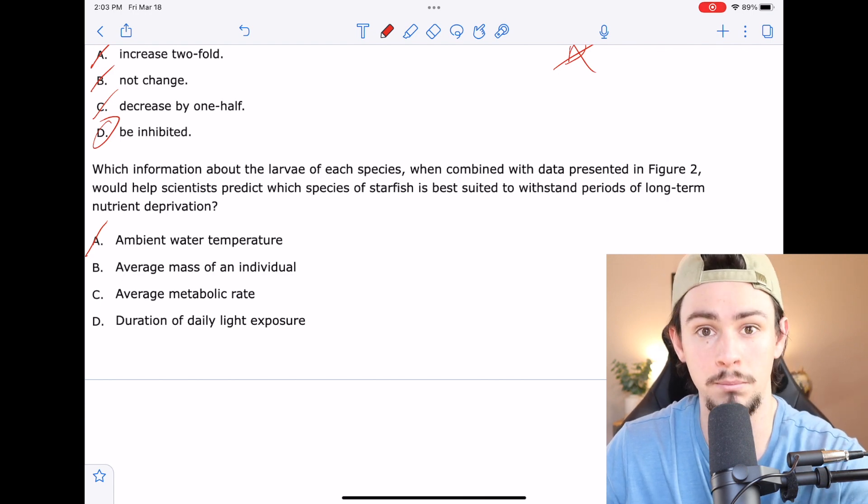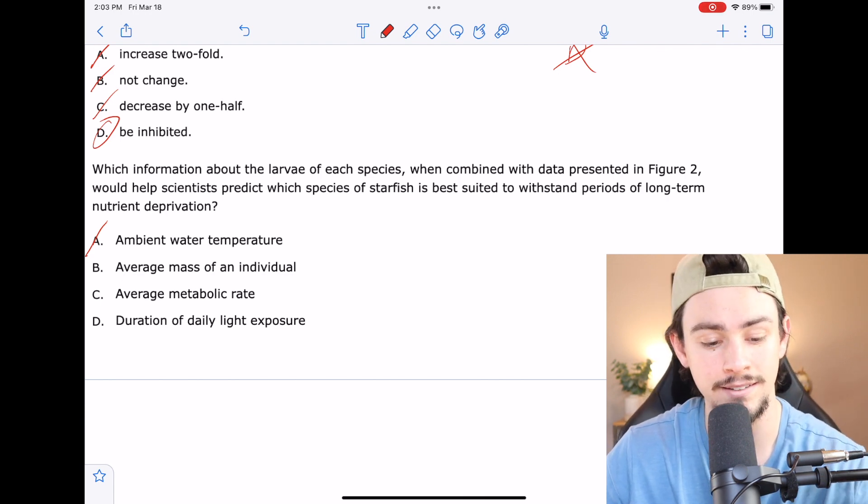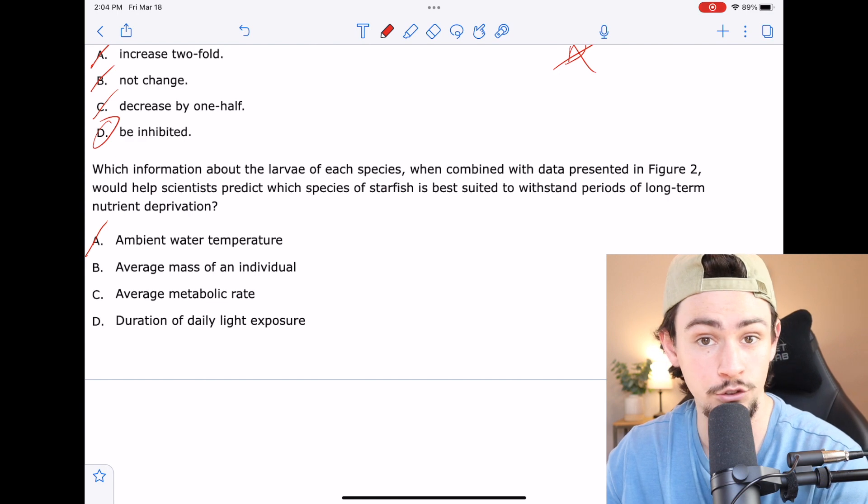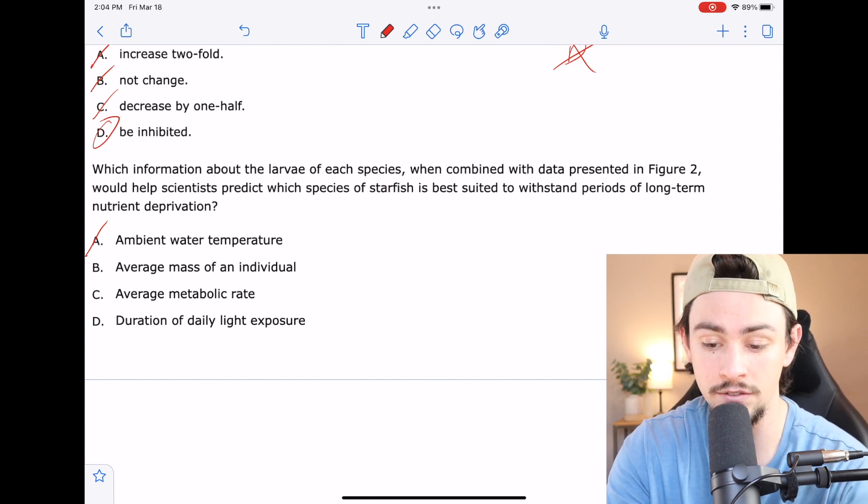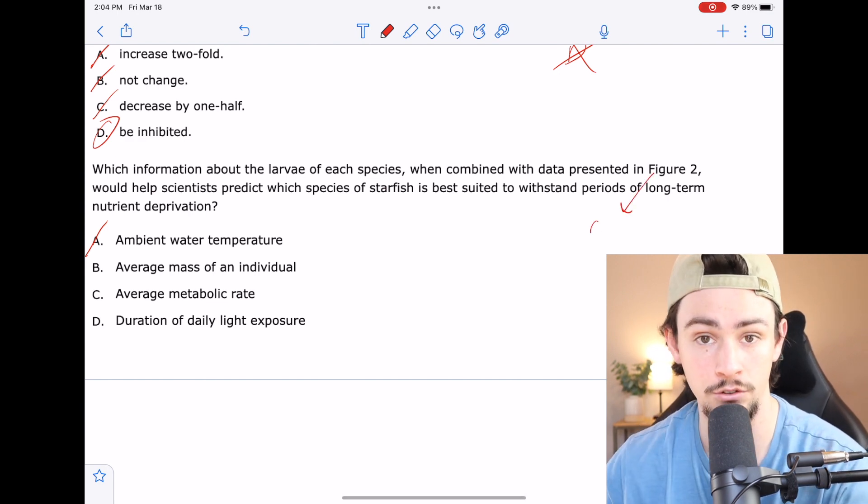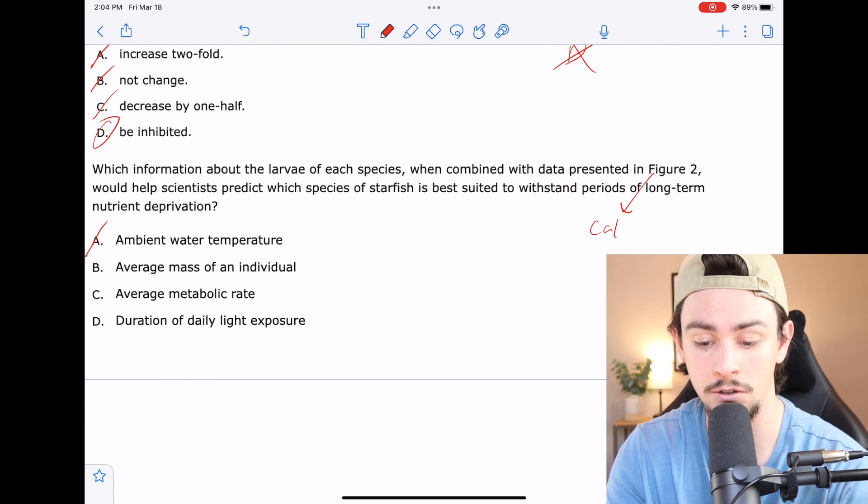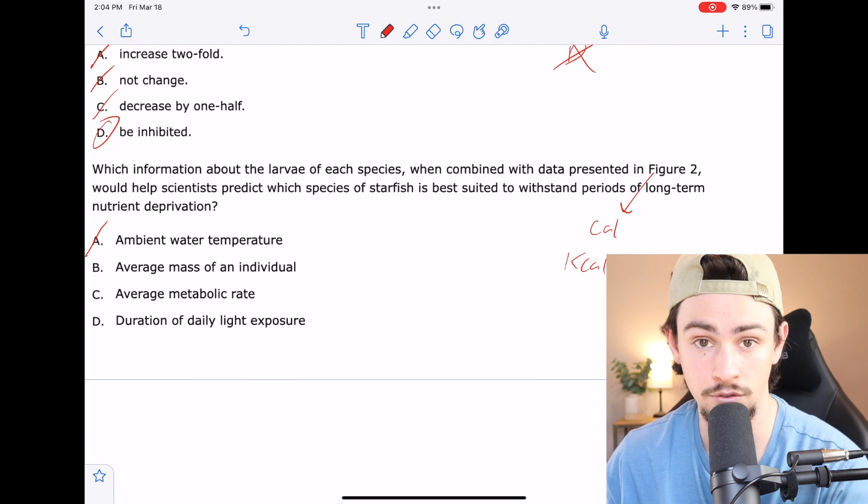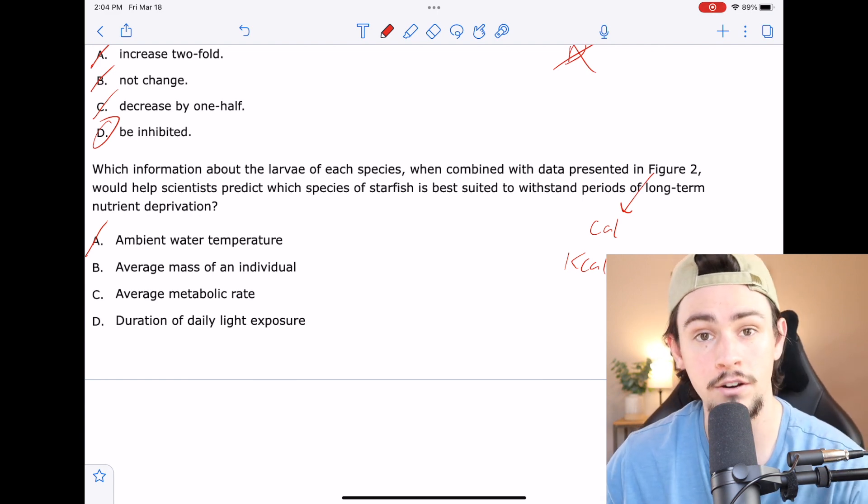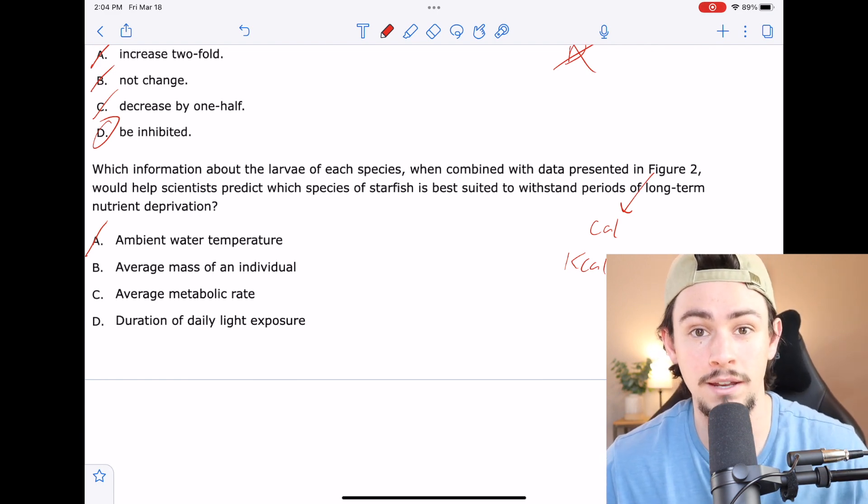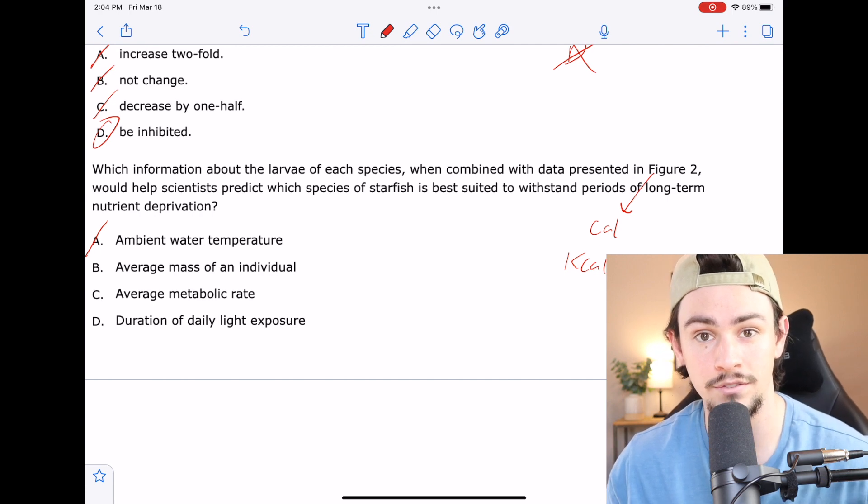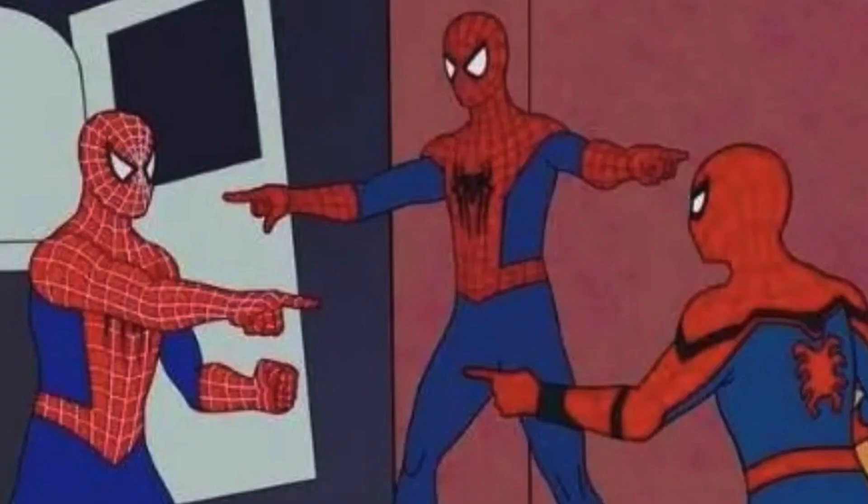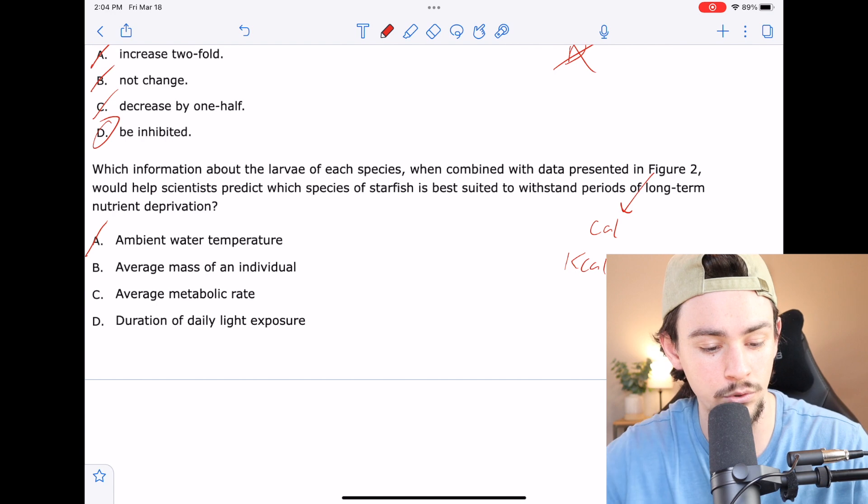C says the average metabolic rate. I like C because C is telling me how many calories do you burn per day? So the data in figure two tells me how many calories you have available. And then C says how many kcals you burn per day. I can use that information to figure out how many days you can survive. So I like C and it's better than answer choice B because the thing about answer choice B that made it attractive was its correlation to answer choice C. So C is obviously a better answer than B. So now I can rule it out.